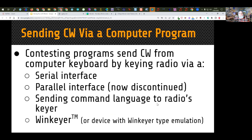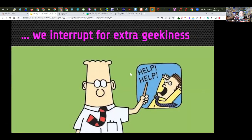Another way you can send CW is from a computer program such as contesting or logging software. They use either a serial interface or a parallel interface — which is pretty much discontinued now — or they can send commands to the radio's internal keyer. You can also use a device called a WinKeyer. The advantage of a WinKeyer over a serial interface is it removes all the keying responsibility and timing from Windows and puts it into a hardware device.